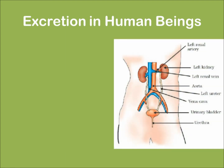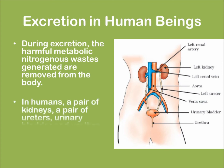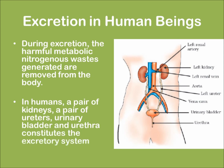This is the excretory system in a human. During excretion, the harmful metabolic nitrogenous waste generated are removed out of the body. In humans, a pair of kidneys and a pair of ureters, urinary bladder, and urethra constitute the excretory system.